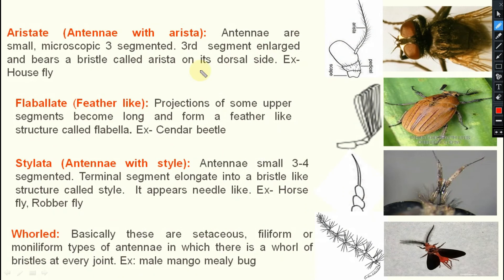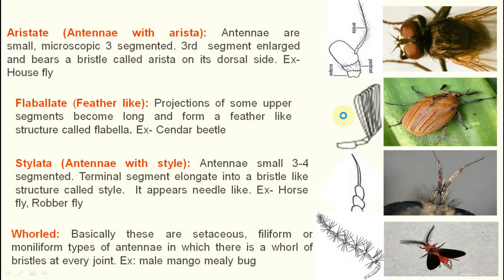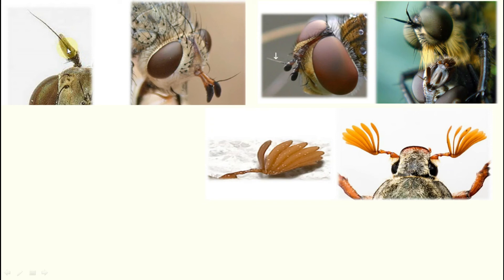Next one is aristate — here an arista will be there. Present in case of housefly. The antenna is very small, microscopic, three-segmented — scape, pedicel, and flagellum. On this flagellum, there is a lateral outgrowth, an enlarged bristle called the arista on its dorsal side — that is why it is known as aristate type of antenna. You can see the scape, pedicel, and the flagellum with the arista coming out on the dorsal side.